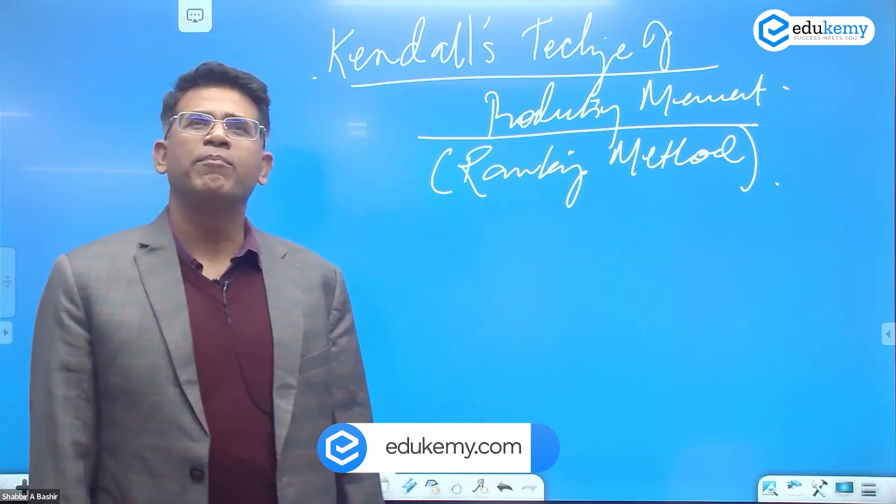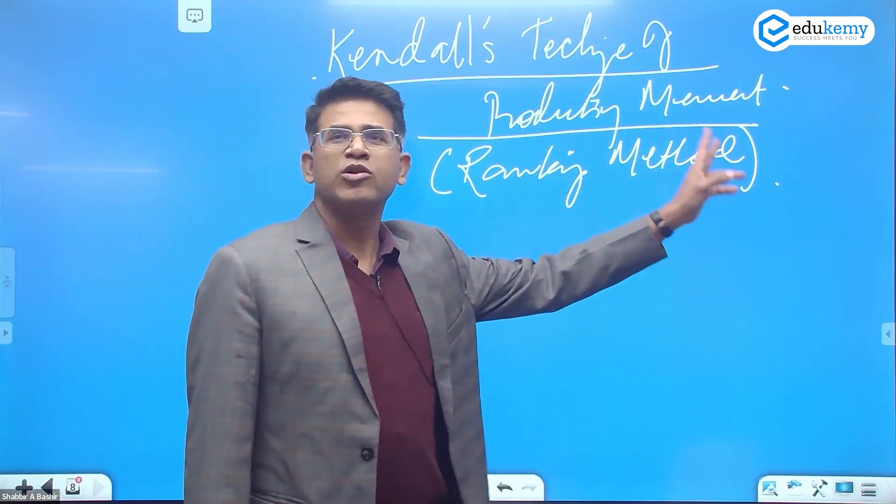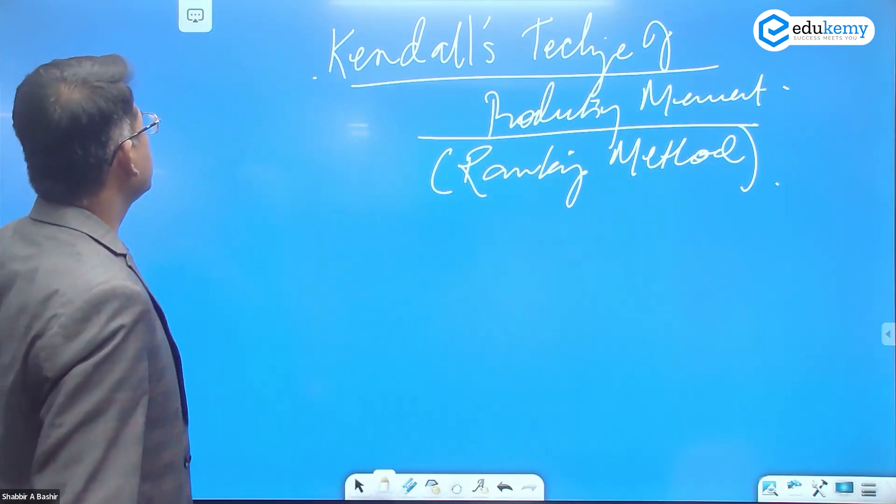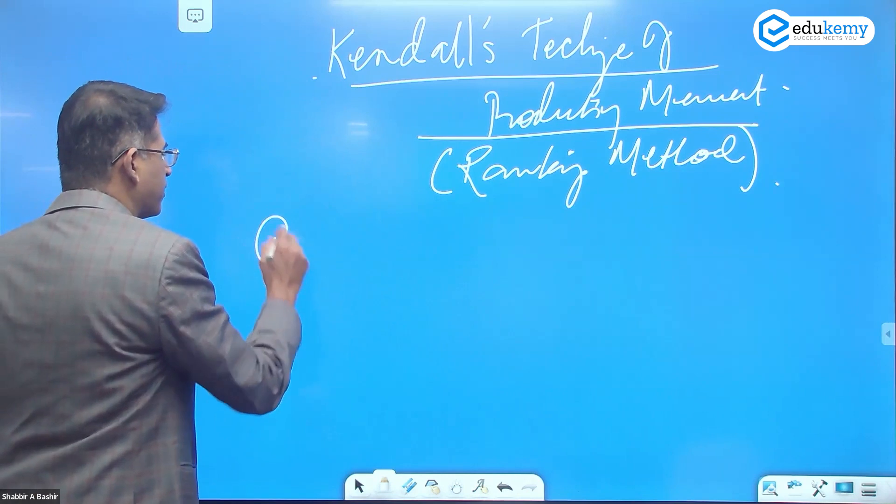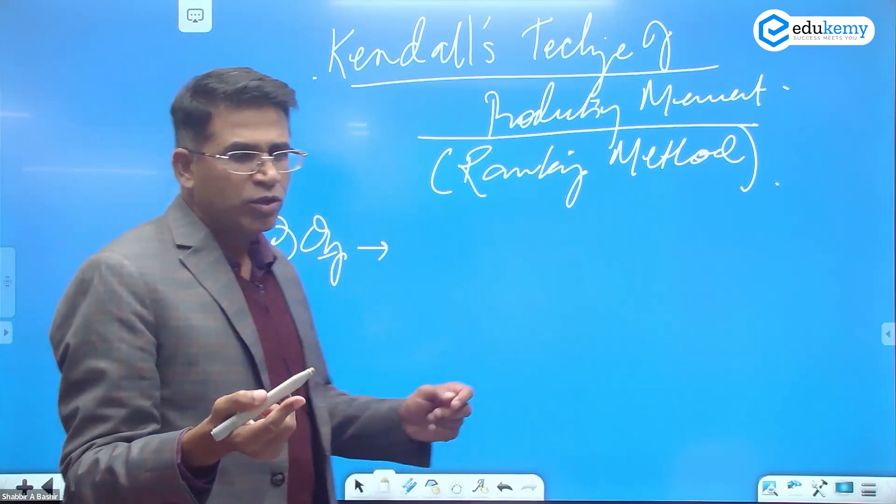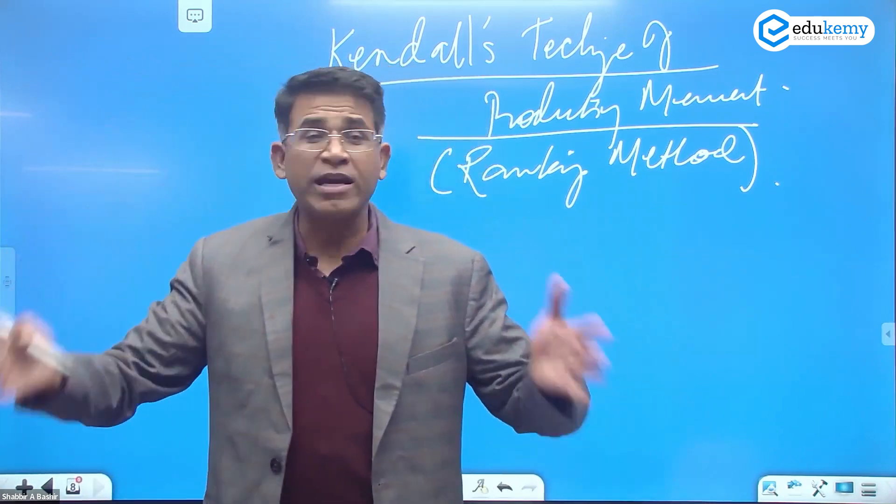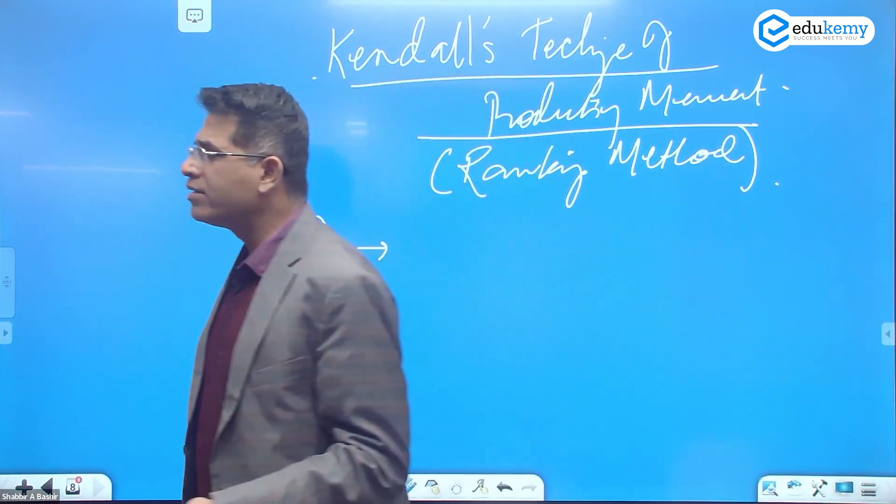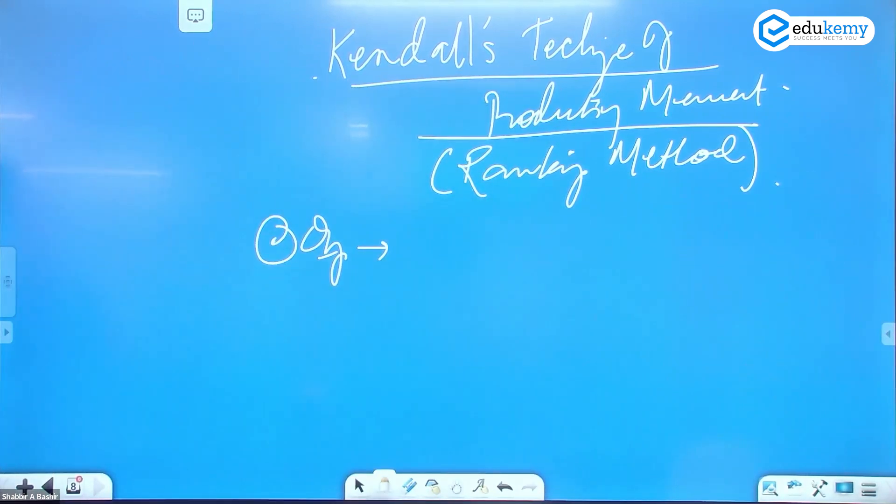It is a measure of productivity itself, also called the ranking method. The objective is to rank or compare two locations that grow a range of crops.